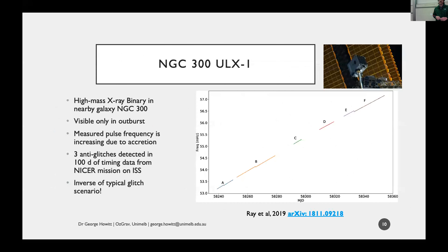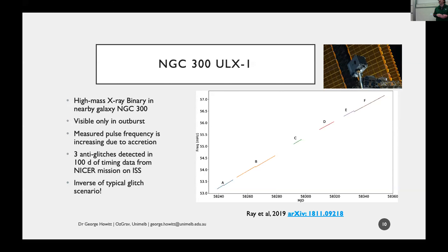The anti-glitches were observed in an interesting object called NGC 300 2X1. This is a high mass X-ray binary in a nearby galaxy - a neutron star with a high mass companion - and you can measure a pulse frequency when it's in outburst. This neutron star is accreting matter from its companion and spinning up quite fast. In a 100-day timing campaign with the NICER instrument on the space station, they saw it spinning up, but at a few points in the middle of the campaign you had sudden spin-downs, which are called anti-glitches. This is the first time we've ever seen spin-down events in an accelerating pulsar.